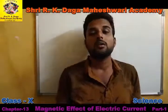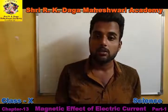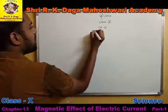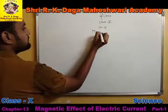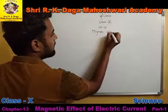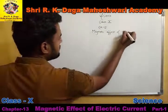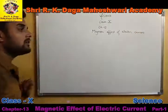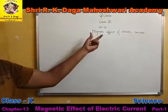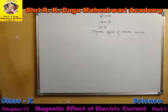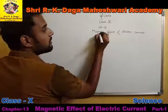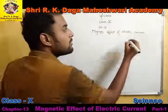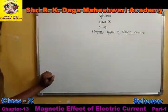Good morning students. From today we are going to start our new chapter, that is Chapter 13: Magnetic Effect of Electric Current. There are two important terms we are going to study in this chapter. First, we are going to discuss the magnetic effect, and also we are going to correlate this magnetic effect with the electric current.